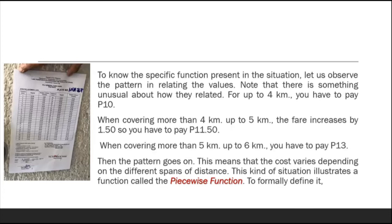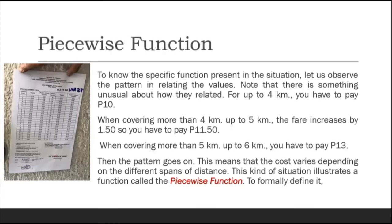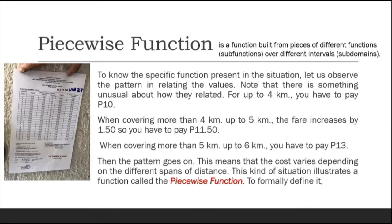To formally define it: a piecewise function is a function built from pieces of different functions — called sub-functions — over different intervals or sub-domains. Since the fare matrix cannot be represented by a single function, it has sub-functions for each interval. That is why we consider it a piecewise function.